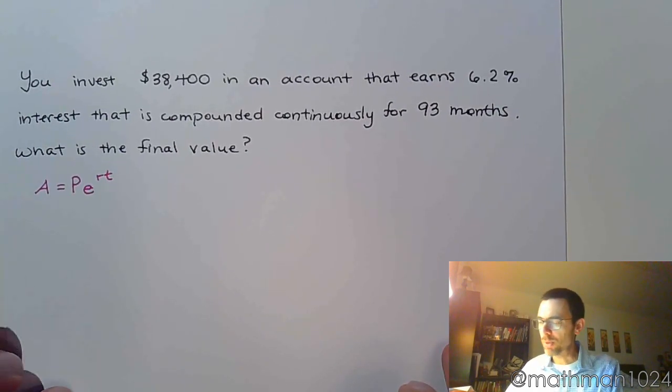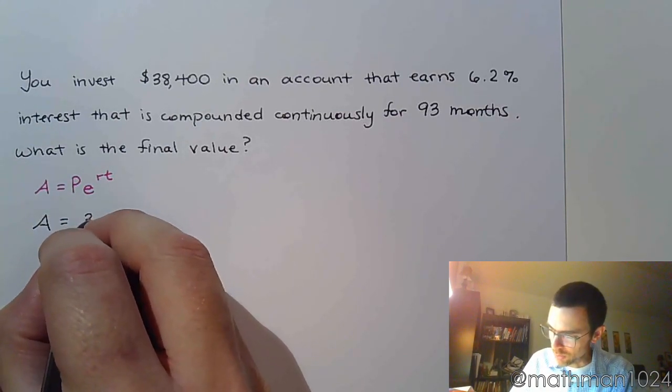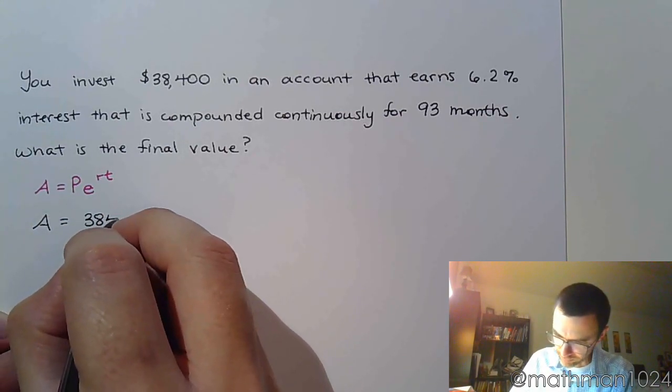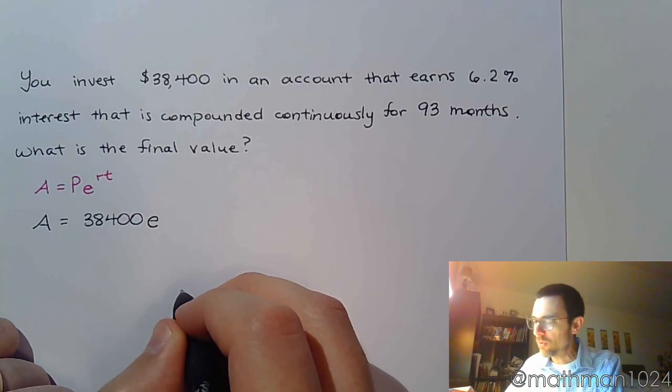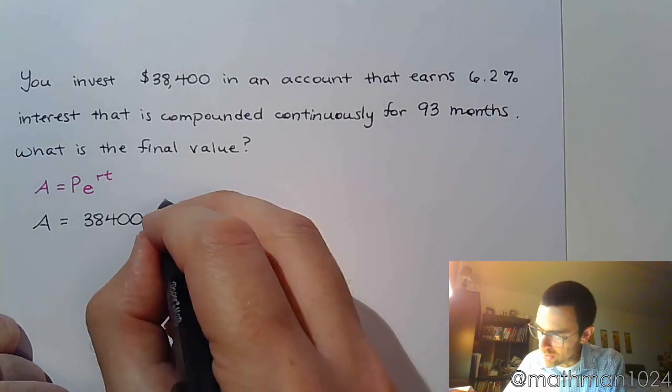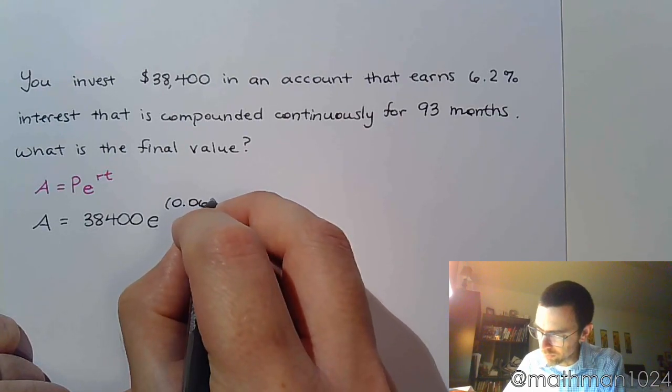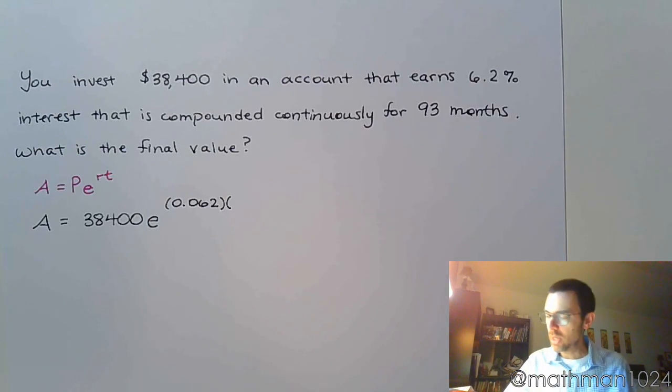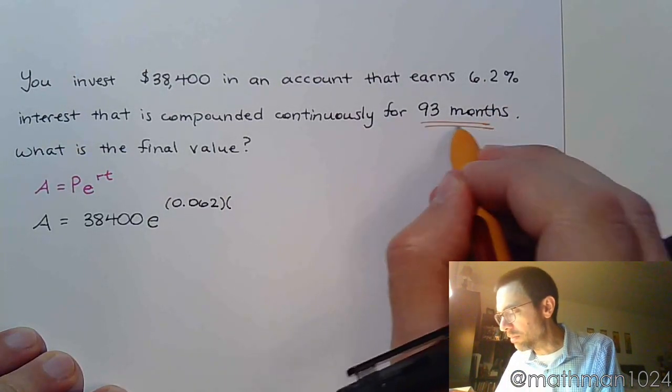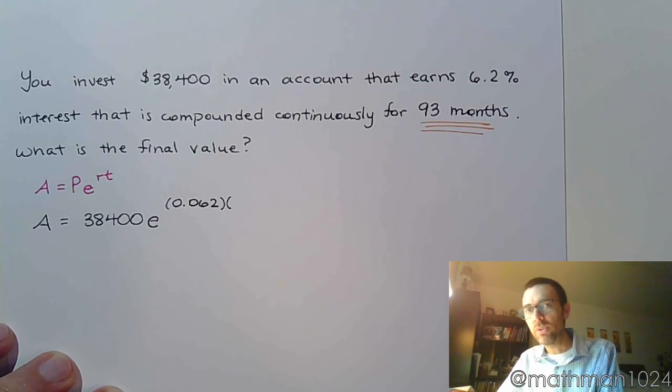You've got that on the calculator, no problem. So, my amount, my final amount is going to be $38,400 e raised to the rt. So, my rate is, make sure you write this correctly, 0.062 times the time. Now, here's where we run into issues. This says 93 months. But, when you use time in these interest formulas, you're talking about time in years. So, we've got to convert that from months to years.